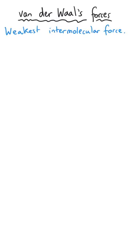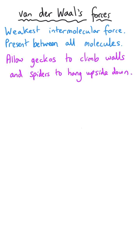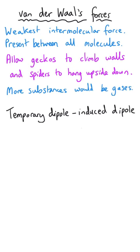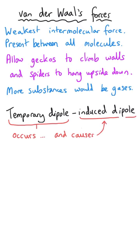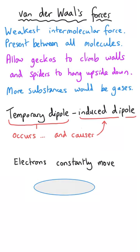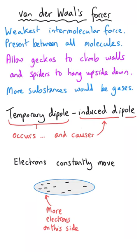Van der Waals forces might be the weakest type of intermolecular force, but they're present in every single simple molecule. Without them, particles would exist as vapours rather than liquids or occasionally solids, so life as we know it would be completely different. Van der Waals forces are sometimes known as temporary dipole-induced dipole, which is a helpful name because it helps us understand how the force comes to pass. Electrons are not static — they are moving all the time within their orbitals, so at any particular moment there could be more electrons in one part of a molecule than another, as shown here.